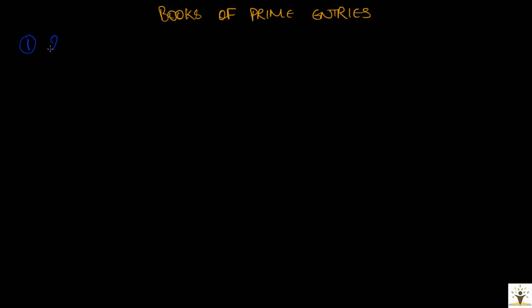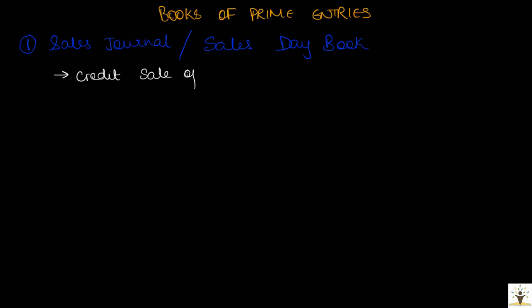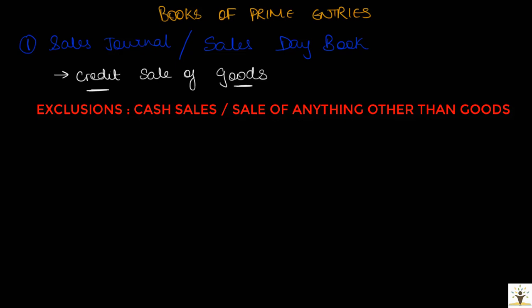The first book of prime entries is the sales journal or the sales day book. This book is used to record all transactions involving credit sale of goods. When goods are sold on credit to debtors, the sale is recorded in this book. Transactions specifically excluded from this book include cash sales of goods or sale of anything other than goods, like sale of a non-current asset.